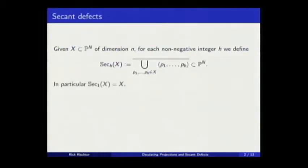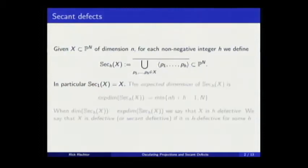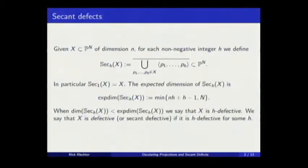For instance, the first secant variety is X. The second one is the more known one, the secant of lines. You take all lines through two points. You can do a dimension count to count the expected dimension of this variety, and this count will give us h plus h minus one.